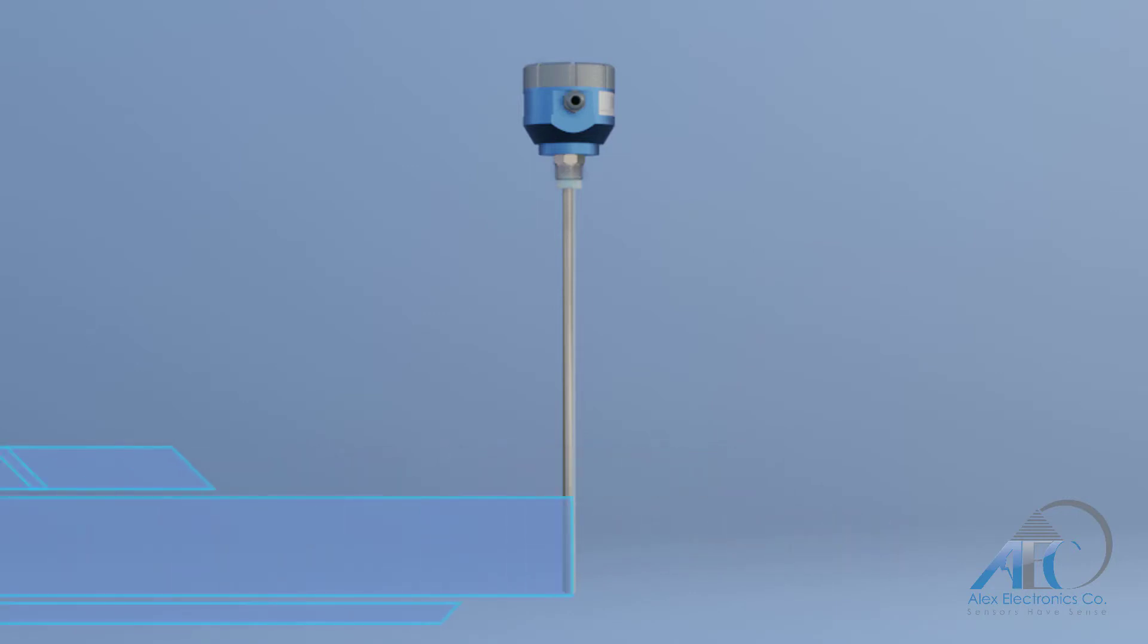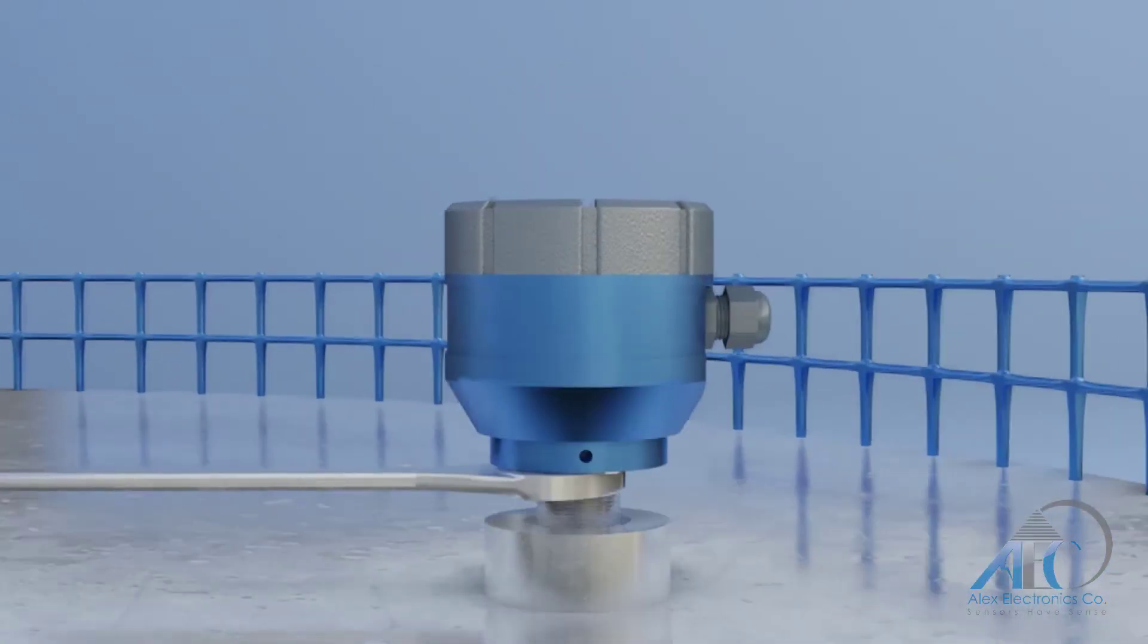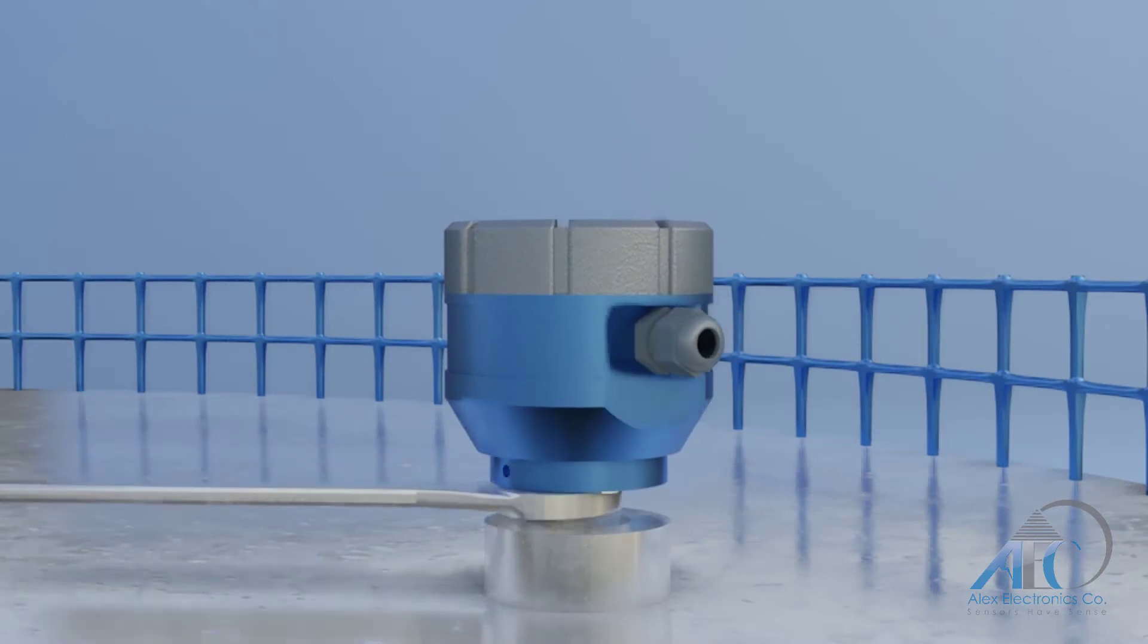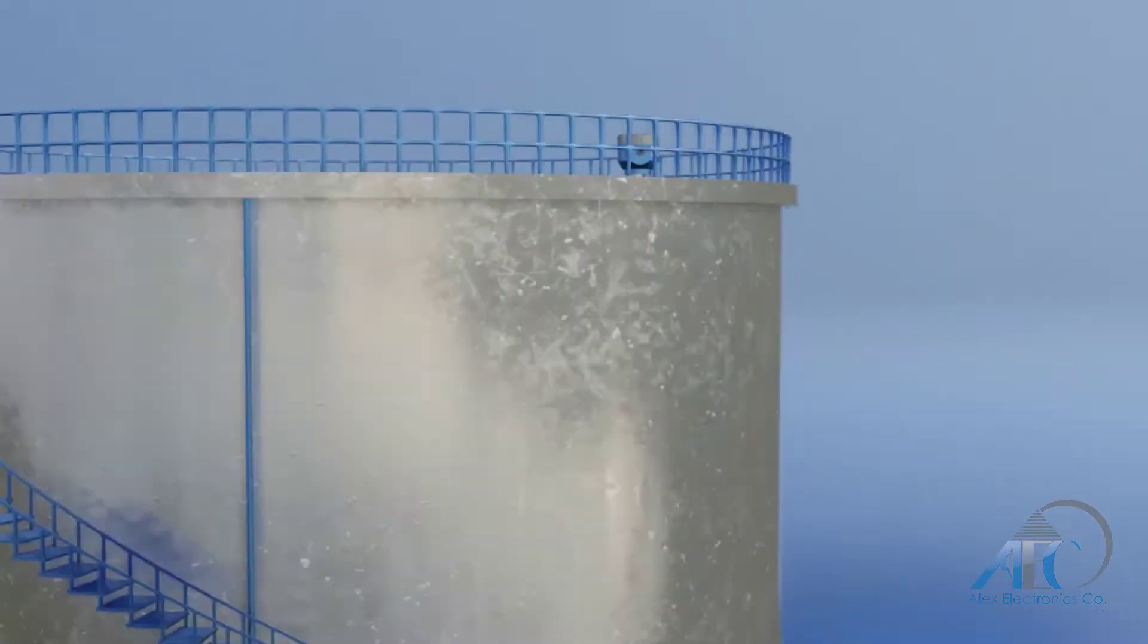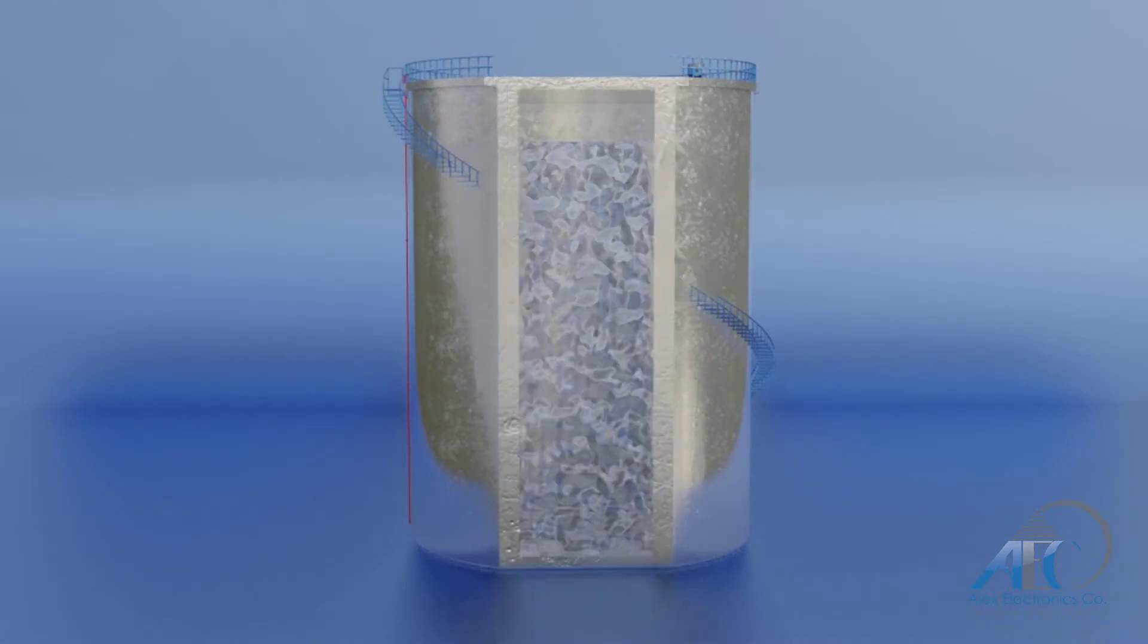First you need to install the device as shown in the instructions manual. Make sure to use a wrench or a suitable tool to tighten the fitting thread and not use the sensor's head. After installing, if the tank is full, empty it or set it to the zero level.